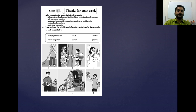Look, there are 6 pictures — number 1, 2, 3, 4, 5, 6 — and there are 6 words: newspaper hawker, rickshaw puller, nurse, waiter, cleaner, postman.